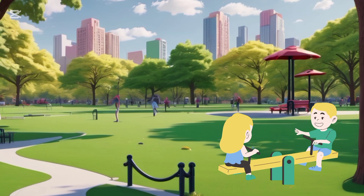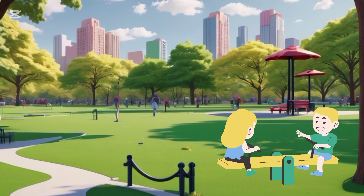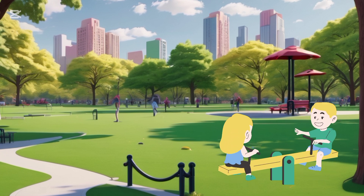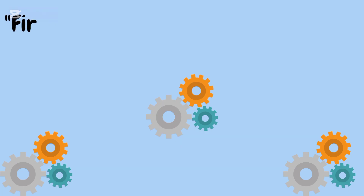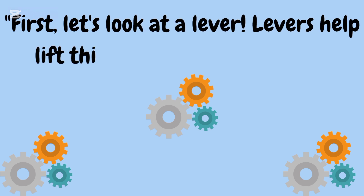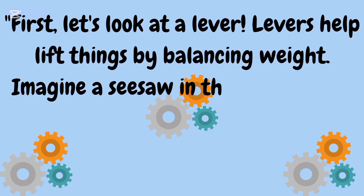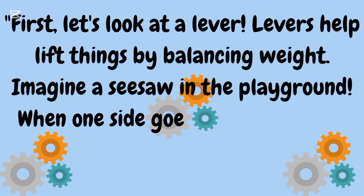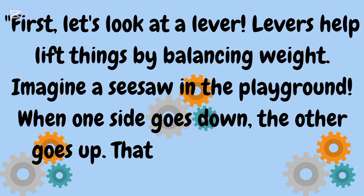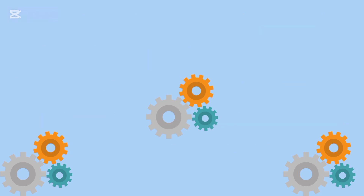A lever helps lift things by balancing weight. As you see, a children's seesaw in a park is an example of the lever. Imagine a seesaw in the playground — when one side goes down, the other goes up. That's a lever.